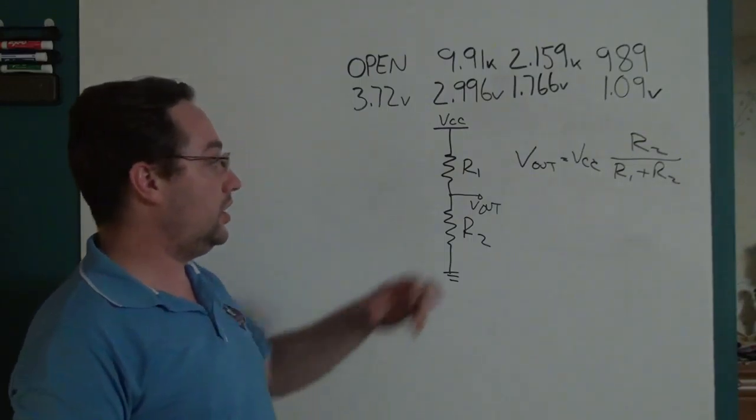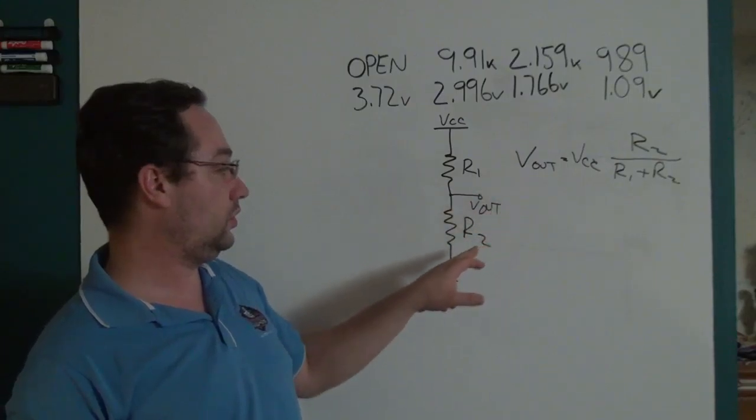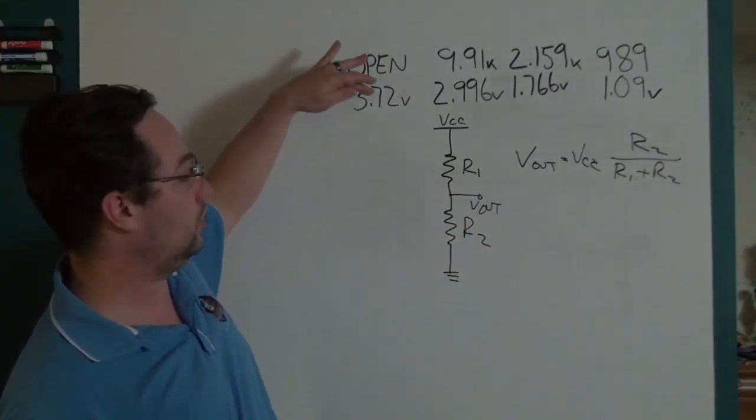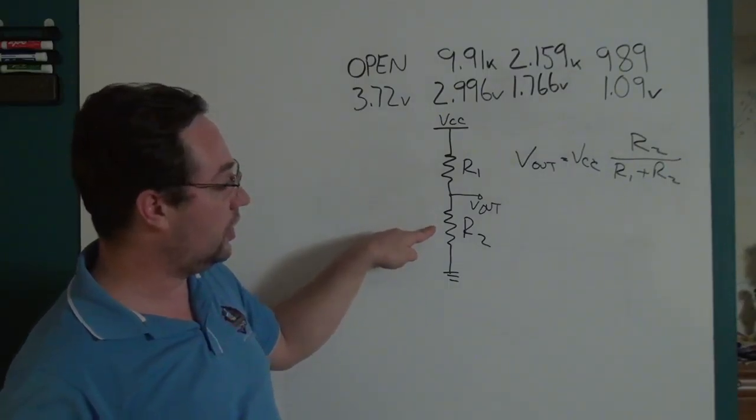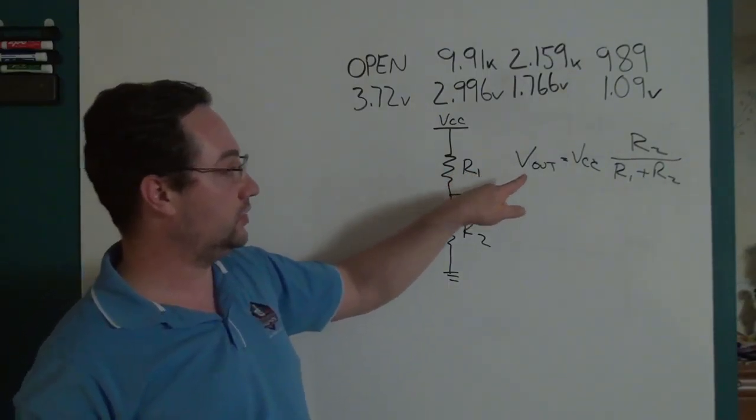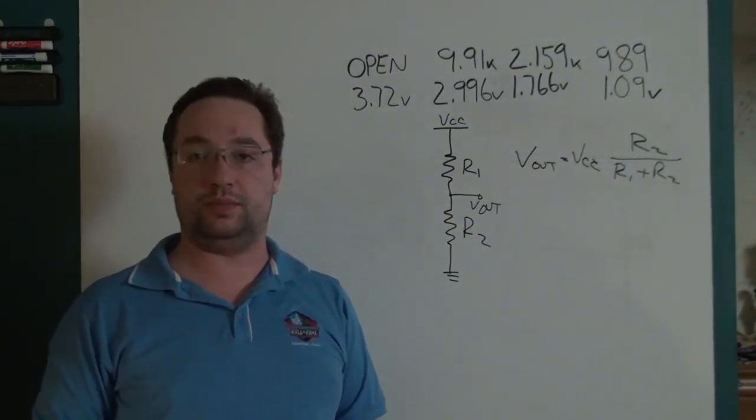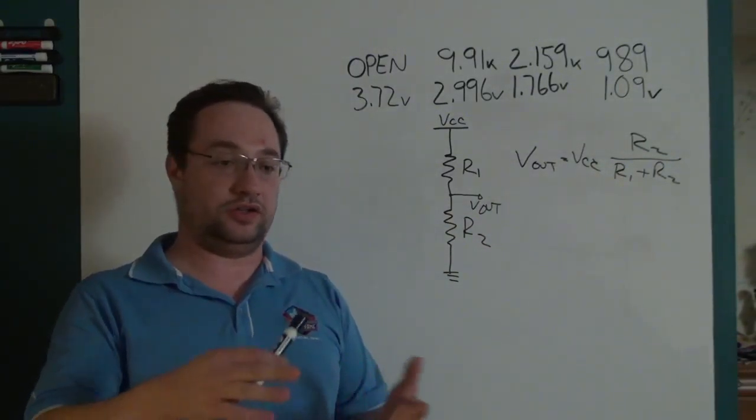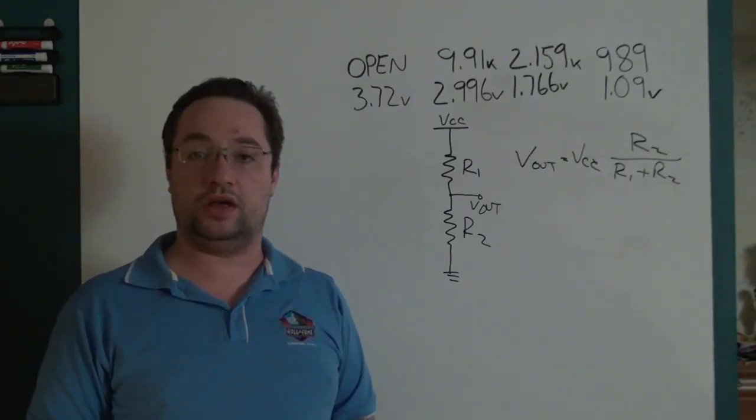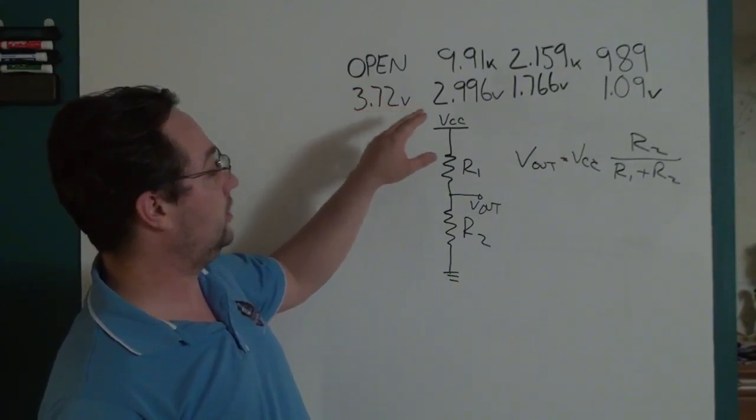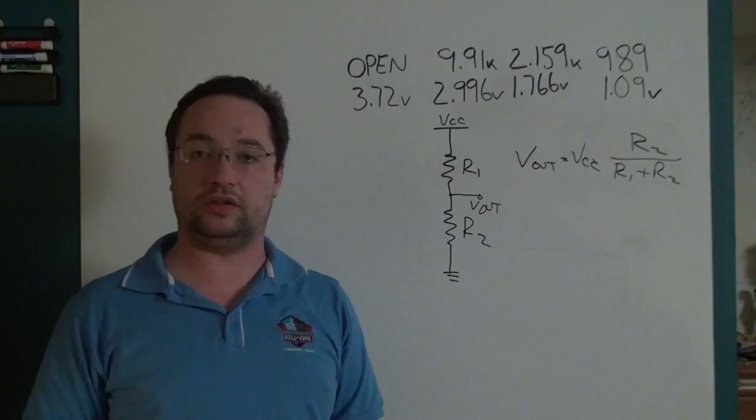You can rearrange this formula to solve for R2 because you know what your VCC is, you know what your Vout is, and you know what your R2 is, and that covers all but a single variable. But this is not math class and I just used the voltage divider calculator online and calculated what the resistance value is for each one of these values.